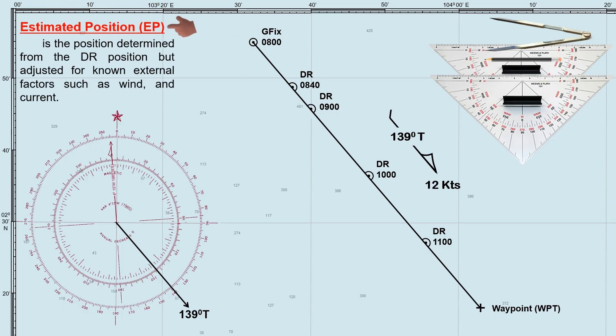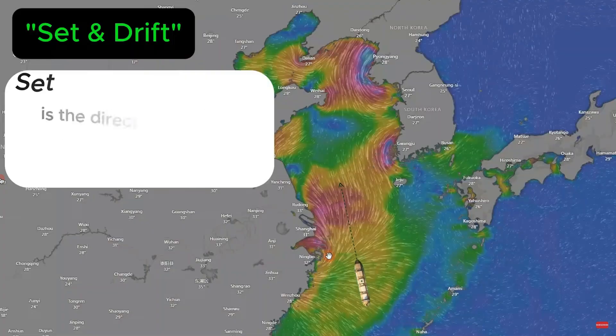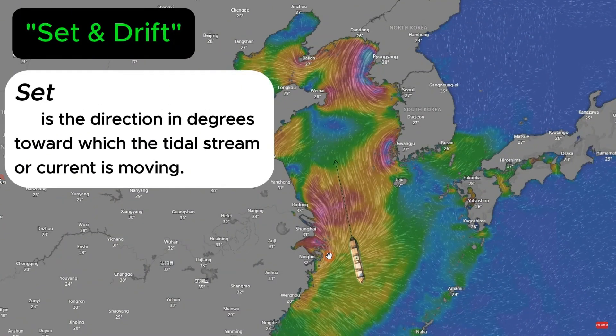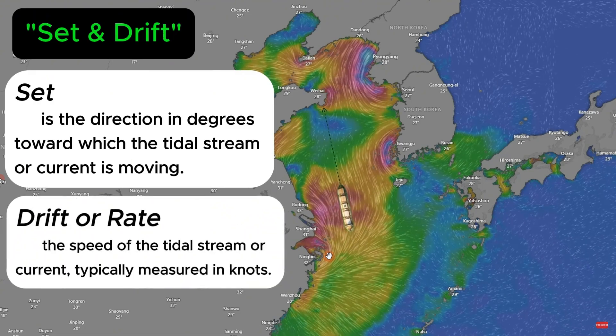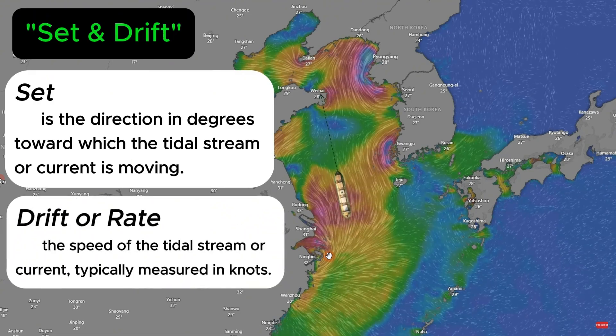Estimated position, EP, is the position determined from the DR position but adjusted for known external factors such as wind and current. In this scenario, we will apply the effect of a tidal stream or tidal current, known as the set and drift. Set is the direction in degrees toward which the tidal stream or current is moving, while drift or rate refers to the speed of the tidal stream or current, typically measured in knots.